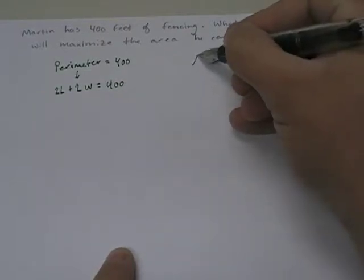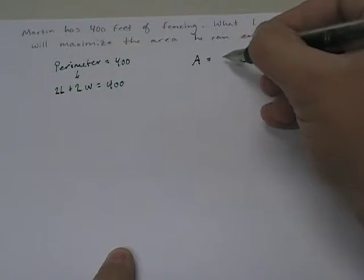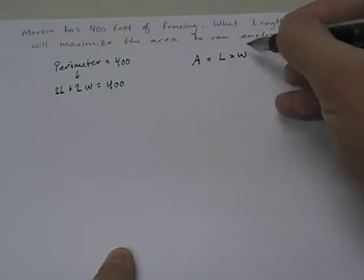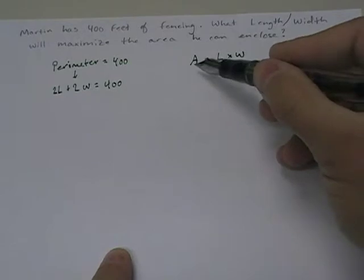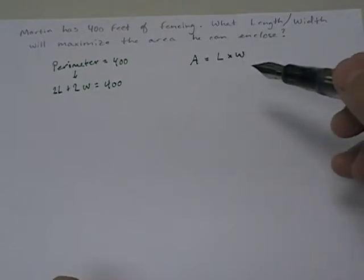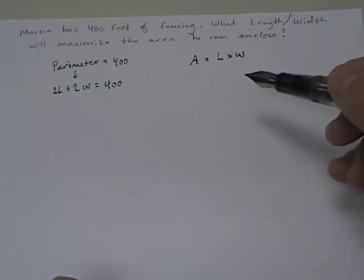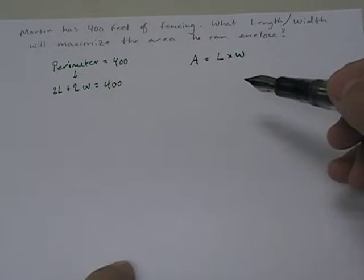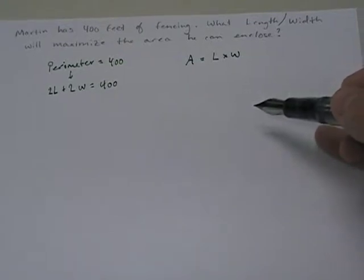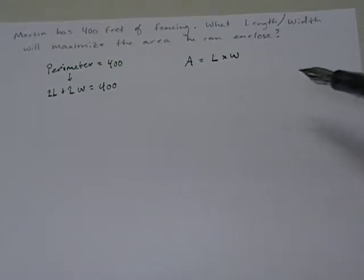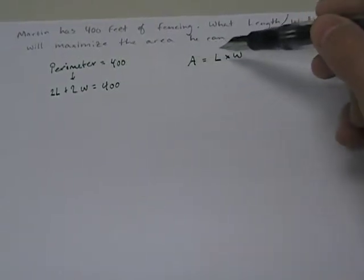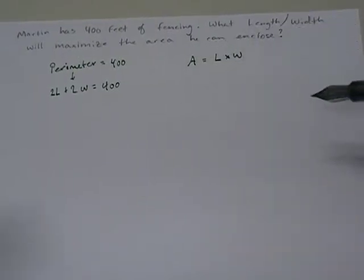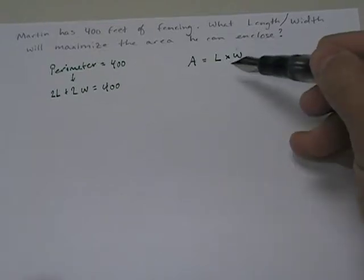The second thing they told us is they want the area to be maximized. Area equals length times width. They want area to be maximized. When we look at things like this, we want to graph them, we want a picture. To graph something on a two-dimensional plane or Cartesian coordinate system, we have to have two variables. X and Y typically are what we use in mathematics. In this case I have area equals length times width. I have three variables. I have to whittle this down to two variables to graph it.